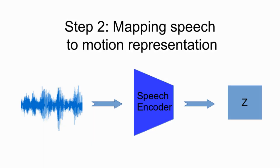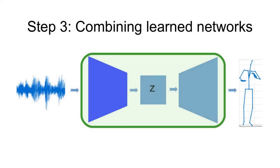Next, we learn to map from input speech to this lower-dimensional motion representation using another neural network. In the final step, we combine these two neural networks.